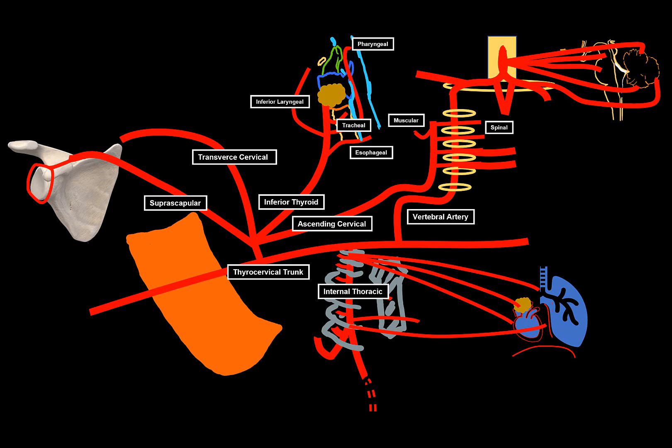The transverse cervical goes to the superior angle of the scapula and divides into the superficial cervical artery — supplying superficial muscles like the trapezius and levator scapulae — and the dorsal scapular artery, which descends along the medial margin of the scapula supplying muscles like the rhomboids. One important thing to note: the dorsal scapular artery can either come from the transverse cervical artery or arise directly from the subclavian artery itself, which will be shown later when discussing the third part of the subclavian artery.